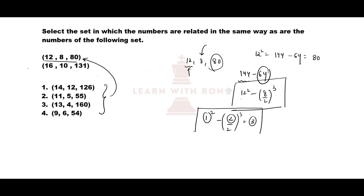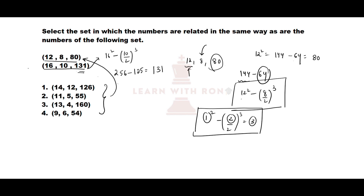Let us check the second set: 16 squared minus (10/2) cubed. 16 squared is 256. 10 by 2 is 5, and 5 cubed is 125. 256 minus 125 is 131, which is the third number. The pattern is verified.